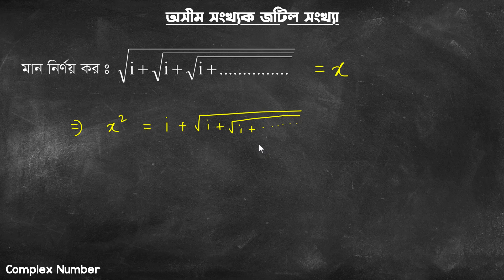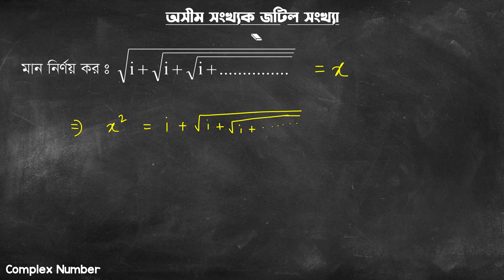Now, as you can see, this expression is actually x — the same value. I will take the value of i. I will take the value of the square root. So if this is the same, we need to write: x squared equals i plus x.